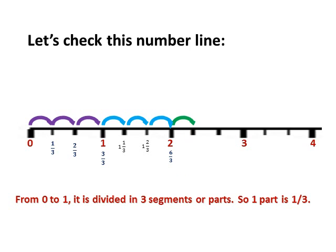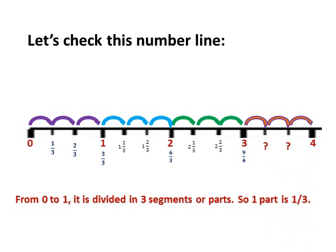Let's try segment two to three — again it's divided into three parts. Since we've already done with one, we start with two. So the first part will be two and one third, the next one would be two and two thirds, and the last one would be nine over three. Then for three to four: we've passed three, so this would be three and one third, the next one would be three and two thirds, and the last one would be four, or twelve over three, equal to four.